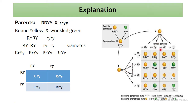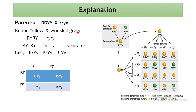In the offspring we see new characters appearing — round green and wrinkled yellow. These are new characters. Both parents do not contain any such combination: the first parent is rounded yellow and the second is wrinkled green. But here we get a new character: round green and also wrinkled yellow, which was not present in either parent.